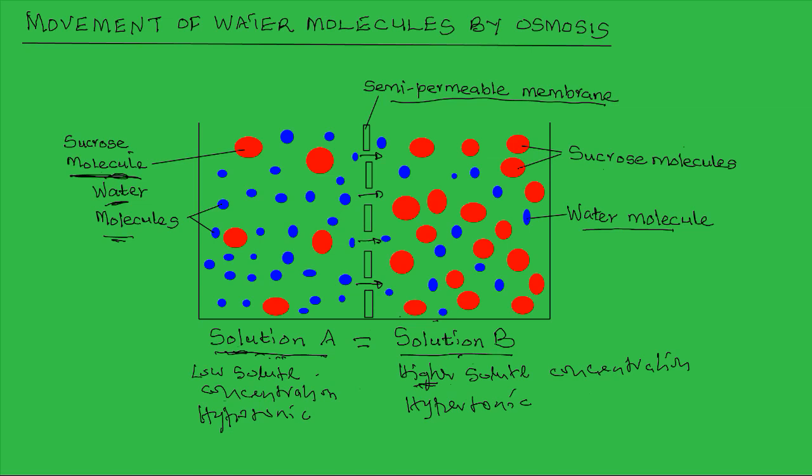We can therefore say as a general rule that whenever two solutions of different concentrations — that is, tonicity — are separated by a semi-permeable membrane, then the direction of osmosis will always be from the hypotonic solution across the semi-permeable membrane to the hypertonic solution, and this will continue until the two solutions become equal in terms of water molecule concentration.